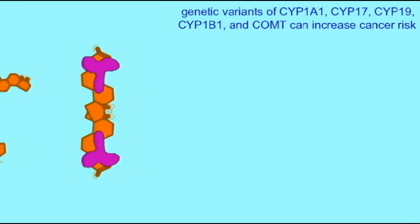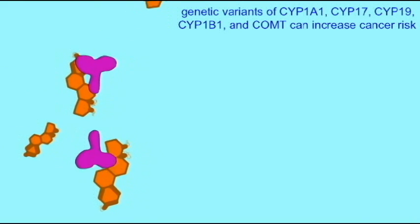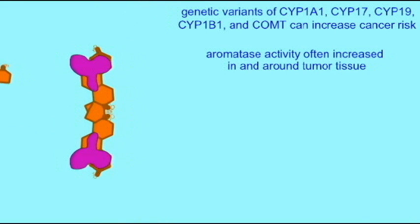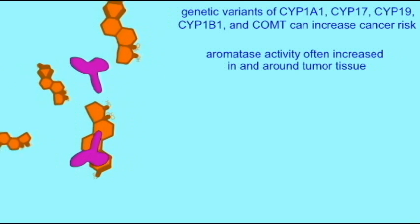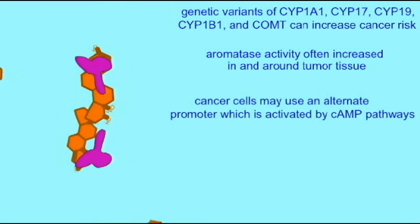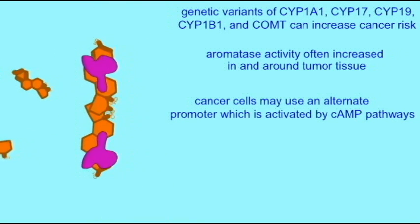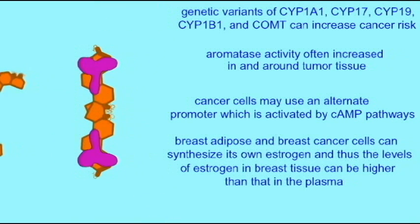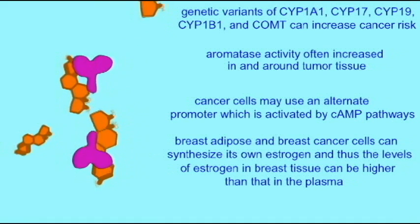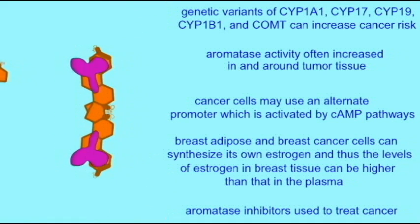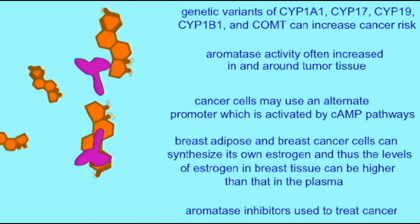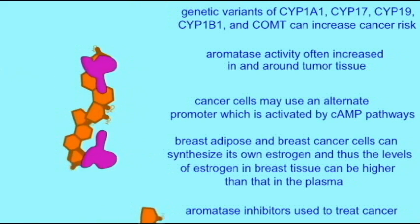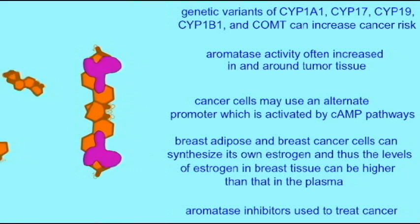There are a number of polymorphisms and variations in genes which can increase the production of estrogen. So some women make more estrogen than others, and genetic variants can increase cancer risk. Humans make a variety of these enzymes, and variations in the genes which encode these enzymes can explain a number of the differences in how we metabolize hormones, plant extracts, pharmaceutical drugs, etc.